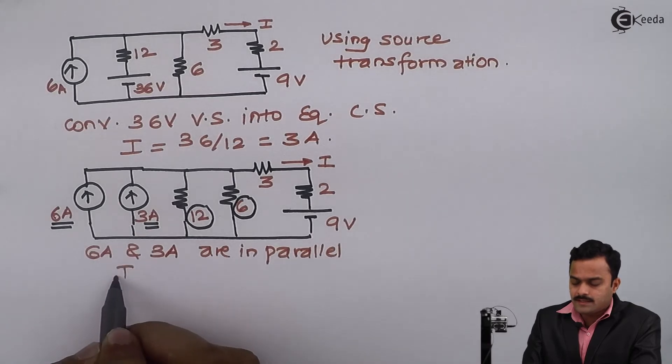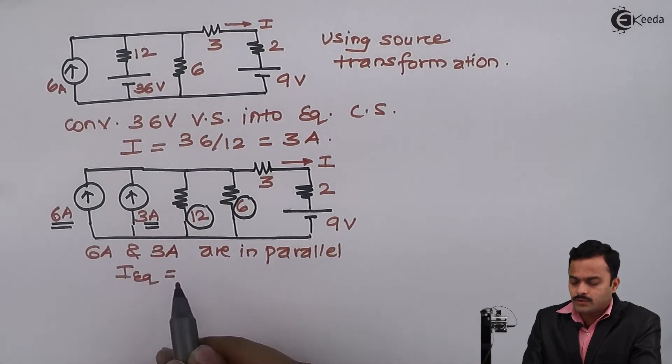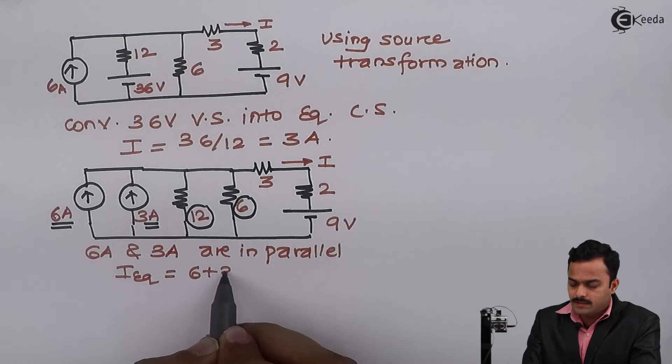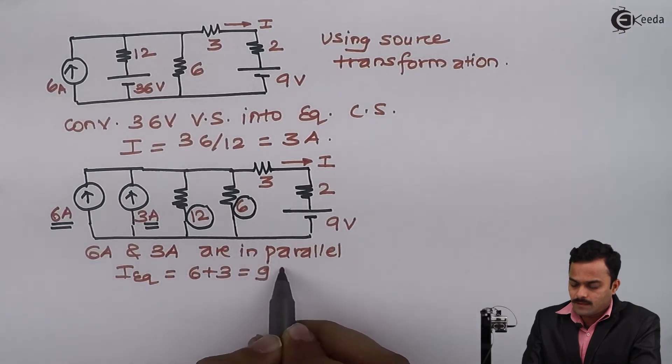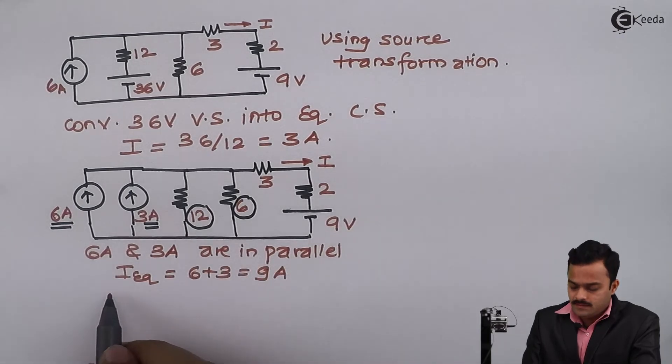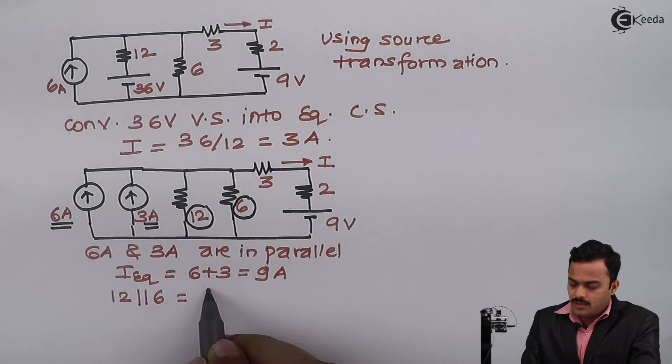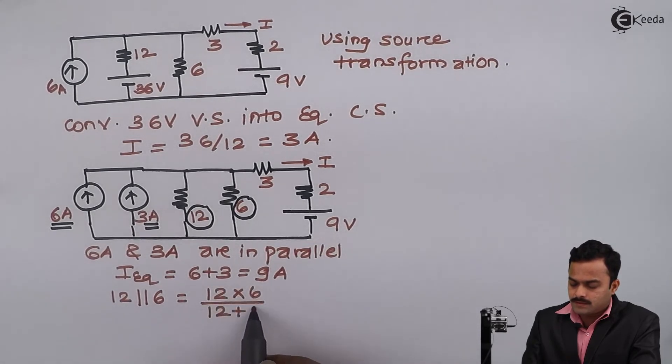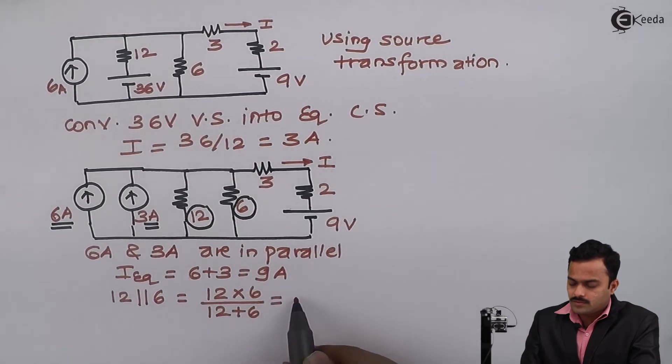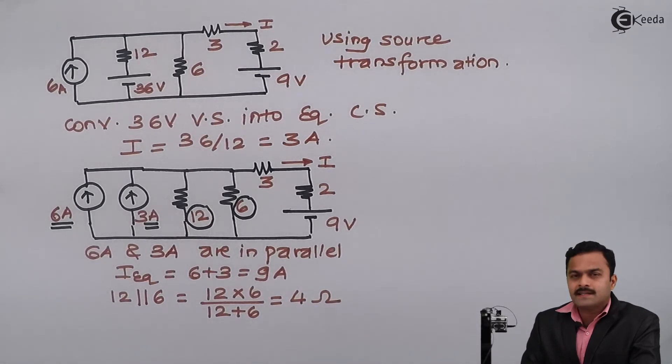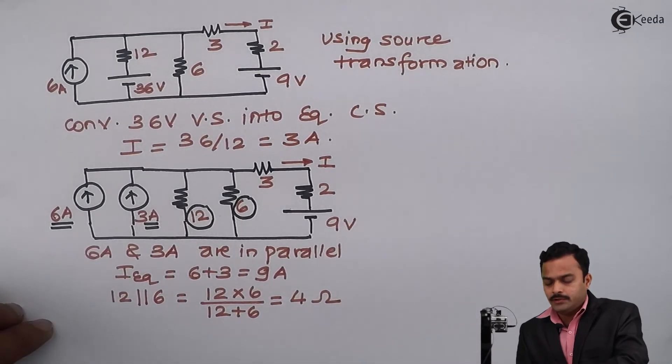The resultant or equivalent current will be 6 plus 3, which is 9 amperes. 12 ohms in parallel with 6 ohms gives a resultant resistor value of 12 multiplied by 6 divided by 12 plus 6, which is 4 ohms. The entire circuit can be reduced.